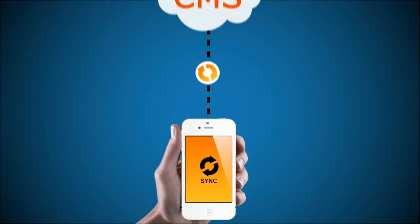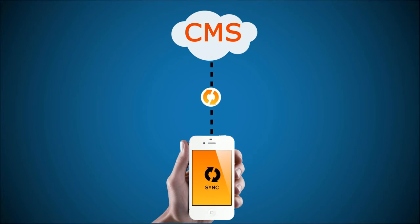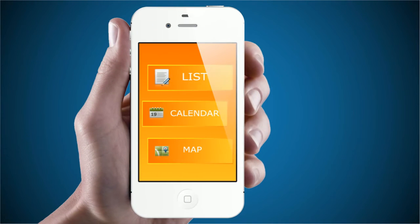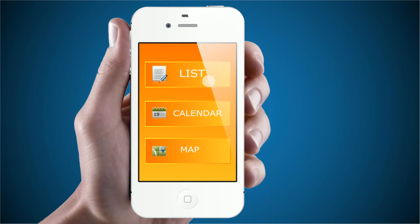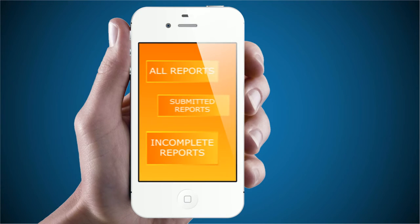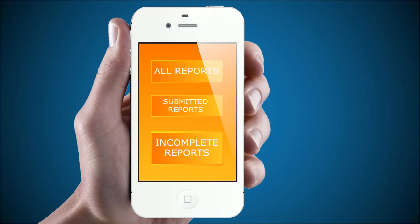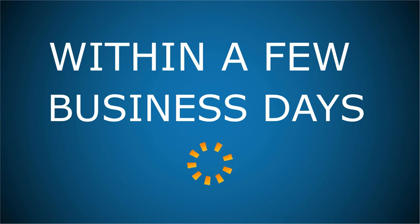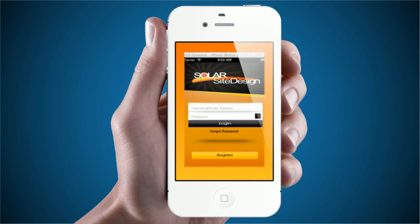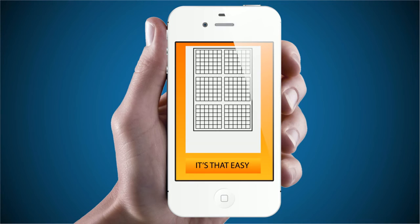Once you click this button, the data on the app syncs with the secure CMS to deliver your inputs directly to engineers. You can view the surveys you have submitted in three ways: by calendar, list, or map. You can always access your reports in the My Reports section of the app. All of your information is still stored in incomplete reports if you haven't submitted your project yet. Within only a few business days, your free drawing will be available for download. Simply log in to your account online, download your drawing, and you're ready to present to your client. It's that easy.